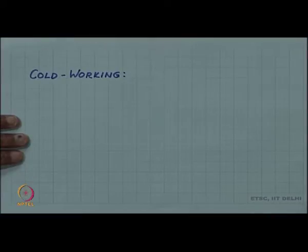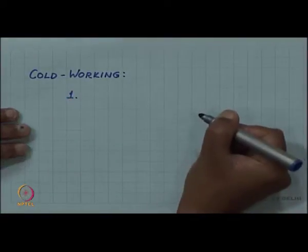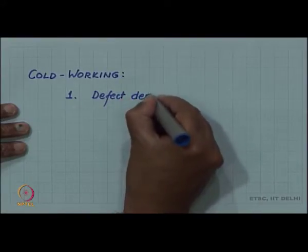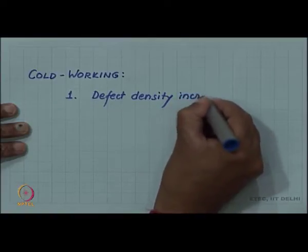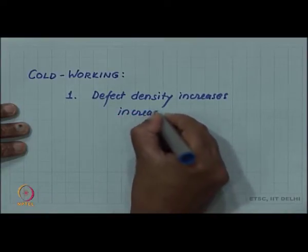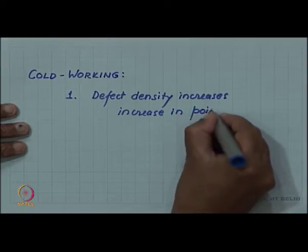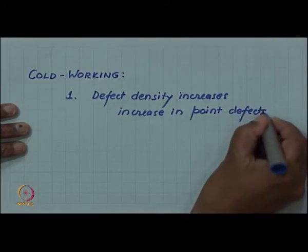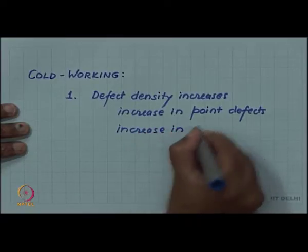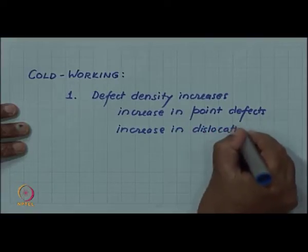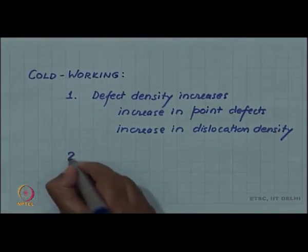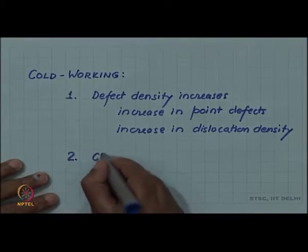In cold working, various kinds of defects increase. The defect density increases. There is increase in point defects and also increase in dislocation density. There is no increase in grain boundary area, but grain shape changes.